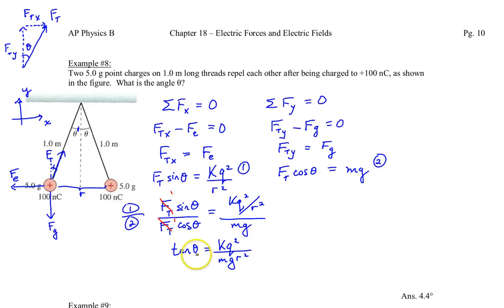So we're almost ready to get that angle theta. We know that K is Coulomb's constant, we know Q is 100 nanocoulombs, we know M is 5 grams, which we need to convert to kilograms, G is 9.8, and then now we need to find R.